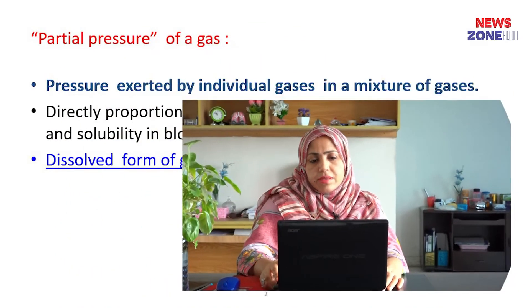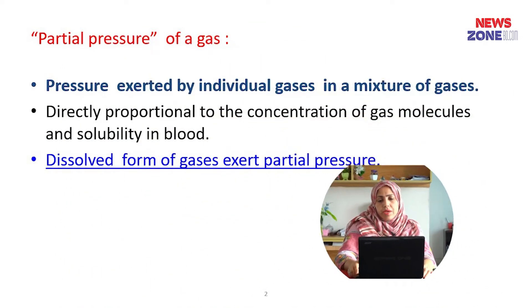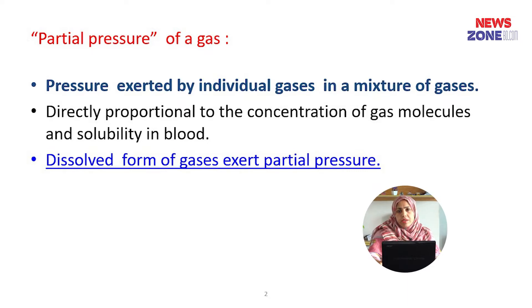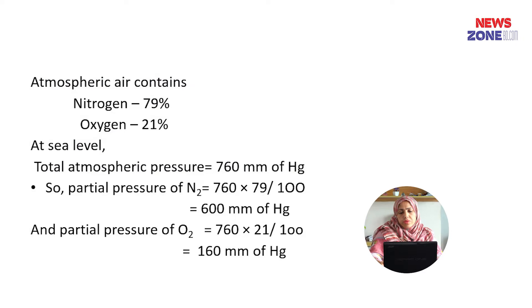First, the partial pressure of gas. What is the partial pressure of gas? It is a pressure exerted by an individual gas in a mixture of gases. It is directly proportional to the concentration of gas molecules and solubility in blood. Dissolved form of gas exerts the partial pressure. Atmospheric air contains nitrogen 79% and oxygen 21%. At sea level, the total atmospheric pressure is 760 mmHg. So the partial pressure of nitrogen is 600 mmHg and partial pressure of oxygen is 160 mmHg.